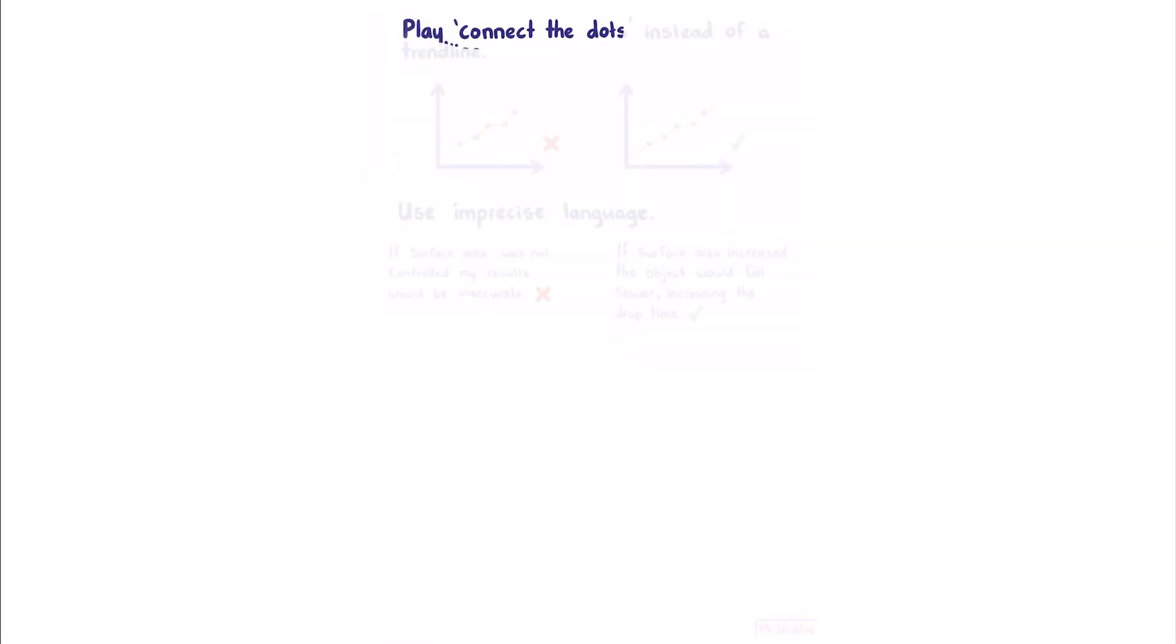And you should never for any reason force your trend line through zero. You should not play connect the dots instead of drawing a trend line. So don't do this. Instead, do this. Finally, it could cost you marks if you use imprecise language. For example, if surface area was not controlled, my results would be inaccurate will give you no points. You should instead say, if surface area increased, the object would fall slower, increasing the drop time.